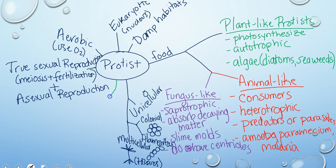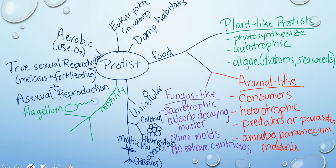Another way we can differentiate among protists is by how they move — we call this their motility. While not every protist has the ability to move, many do, and we can break it down into three basic cellular structures for moving. The first is the flagellum, a whip-like or tail-like apparatus — an extension of the cytoskeleton. The most famous non-protist example is a sperm cell, but protists like euglena also have these.